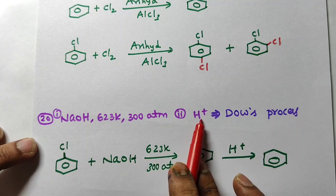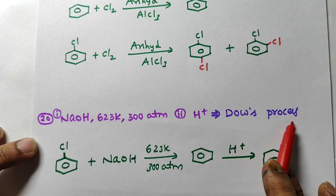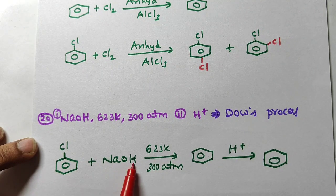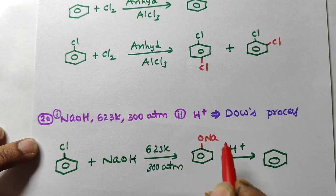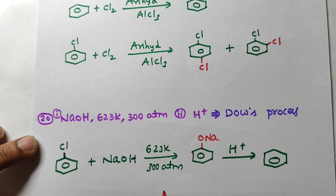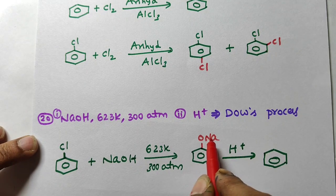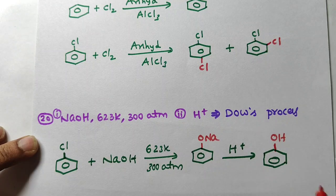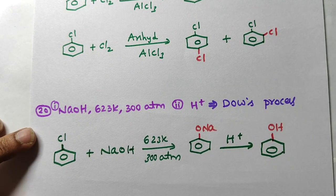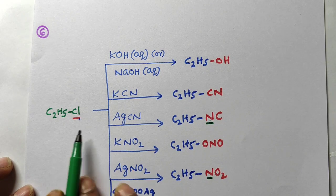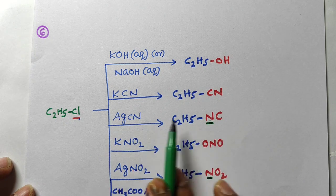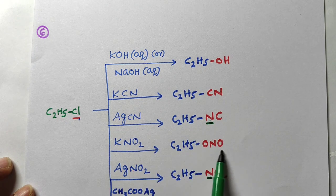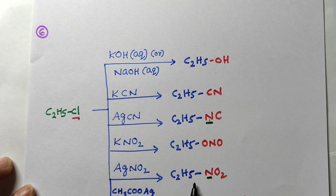Next reagent: NaOH at high temperature and pressure, followed by reaction with H⁺ — this is the Dow's process. Chlorobenzene reacts with NaOH at high temperature and pressure: Cl is replaced by ONa to give sodium phenoxide. Then reaction with H⁺ replaces Na⁺ with H⁺ to give phenol. Also: ethyl chloride with KCN gives ethyl cyanide; AgCN gives isocyanide; KNO2 gives ethyl nitrite; AgNO2 gives nitroethane.